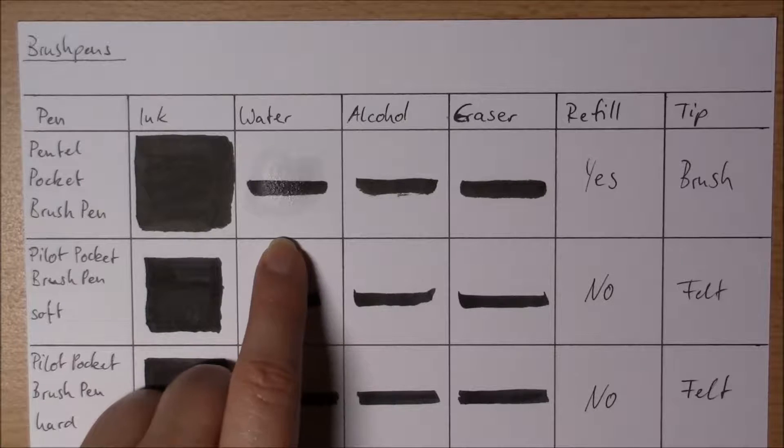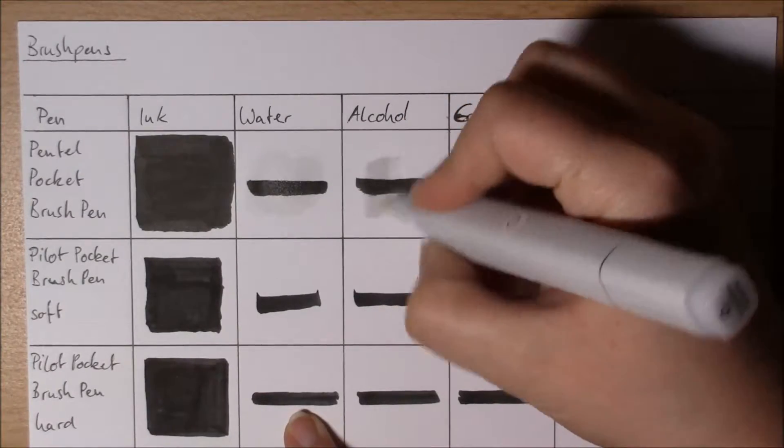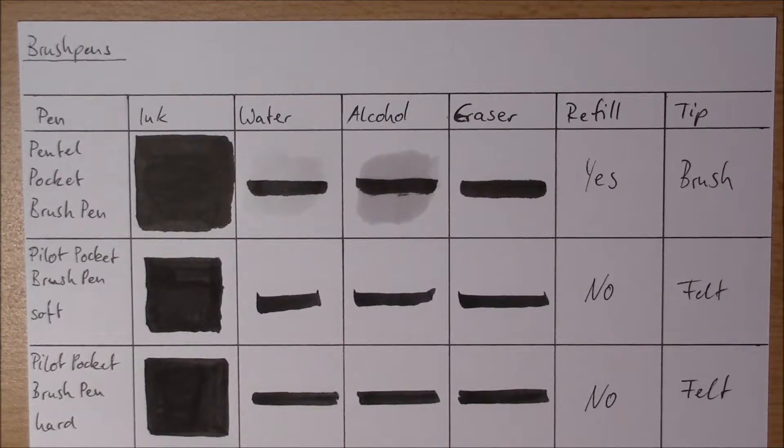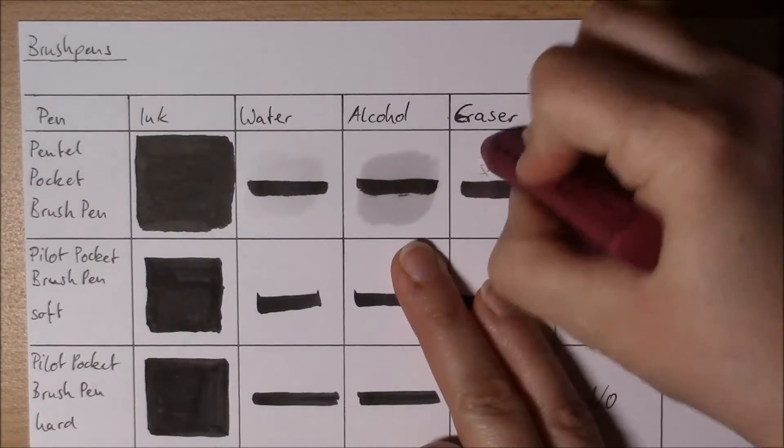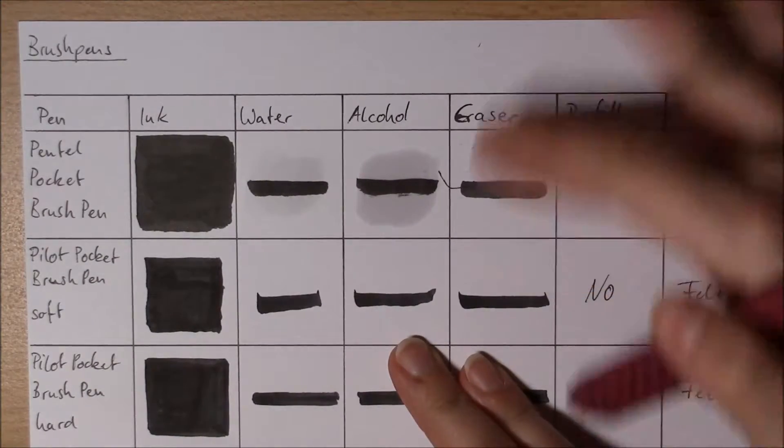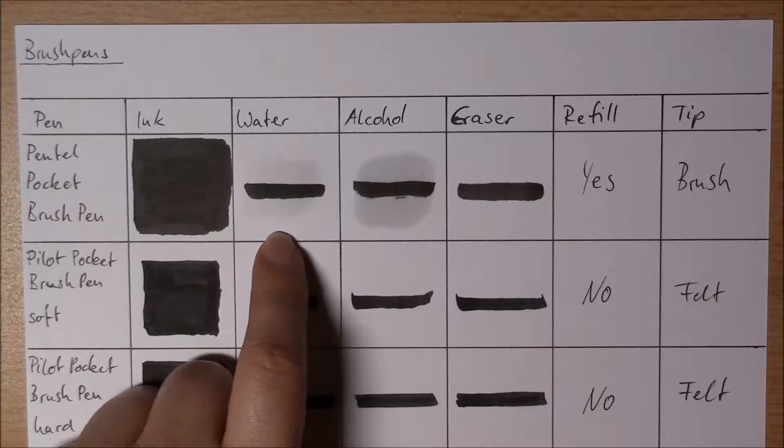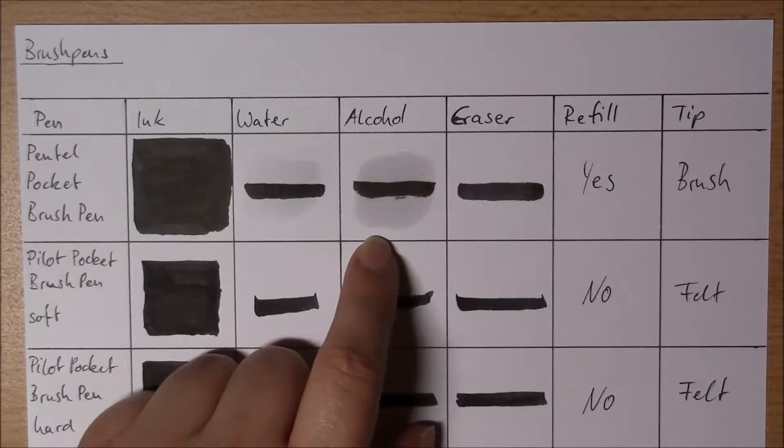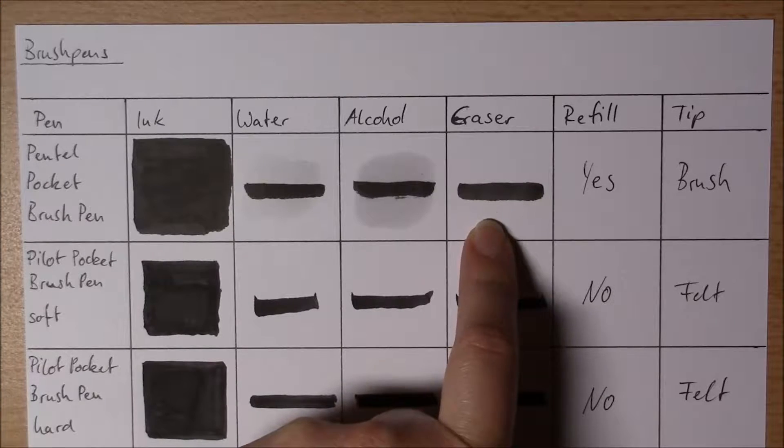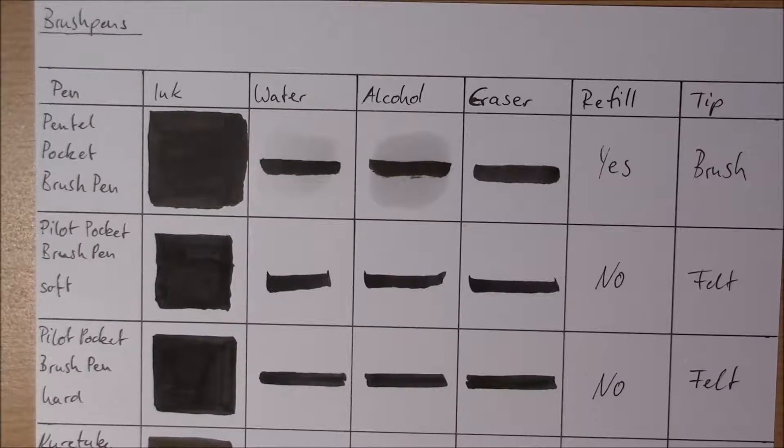I've painted this on yesterday so it had 24 hours to dry. So alcohol and eraser. Let's see. Some pigments came off with the water. It didn't smudge with the alcohol marker and it got a tiny bit lighter from the eraser, but I was erasing really hard.